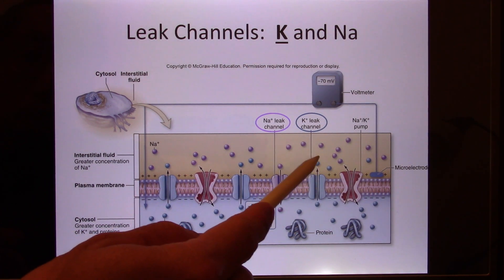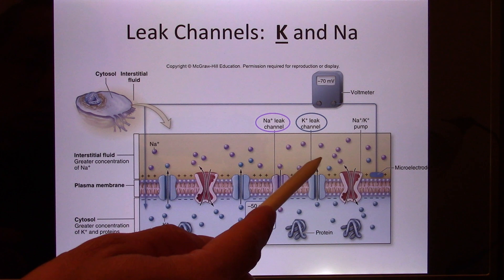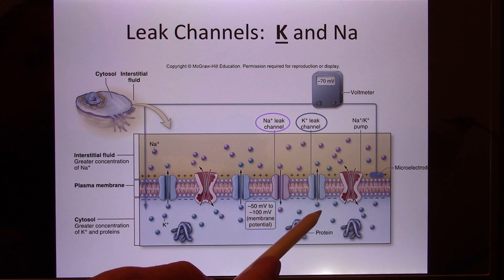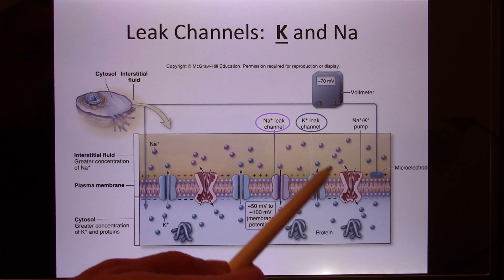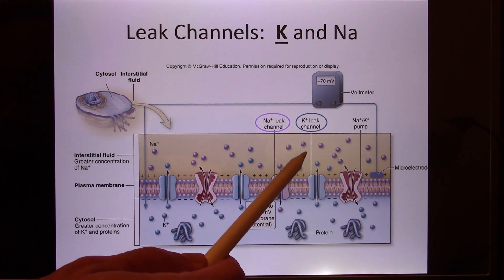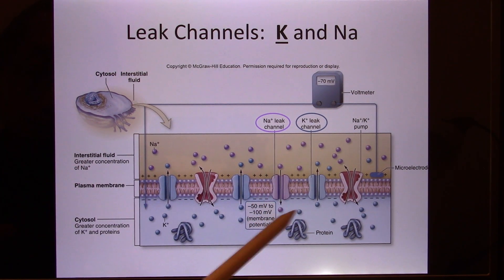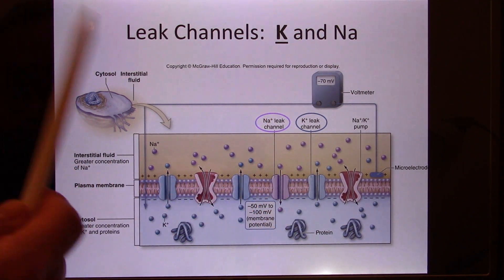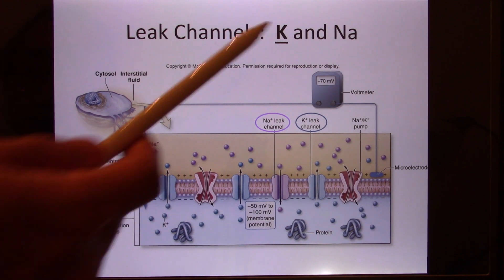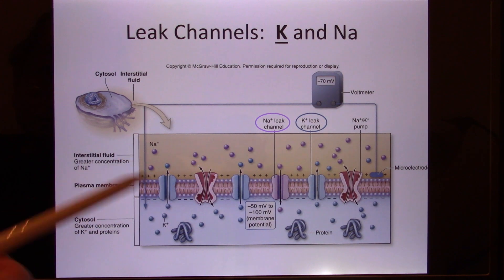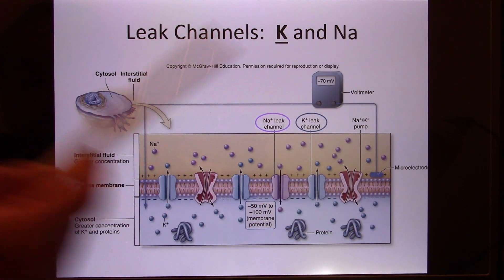When potassium leaks out, outside has more positive charge and inside has more negative charge. These positive ions leaking out make it progressively harder for the next potassium to leave, because the negative charge inside traps the positive ones. So it won't equalize — you follow the concentration gradient moving out, but also have the electrical gradient pushing them in. Eventually they balance. Inside remains high potassium and outside remains high sodium. The potassium leak channel is the main contributor to the resting membrane potential. The cell is much more permeable to potassium than to sodium when resting.